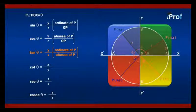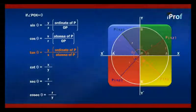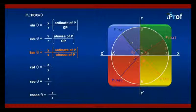Tangent theta will be equal to y upon x. That is ordinate of P divided by the abscissa of P.